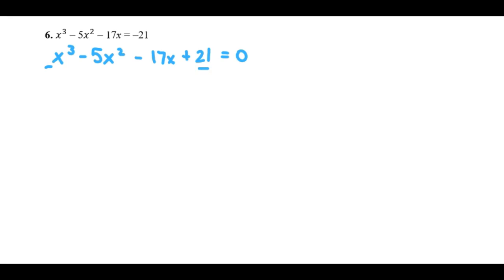So in this case, we have 21 and 1. So my possible zeros are plus or minus 21, plus or minus 7, plus or minus 3, and plus or minus 1. So let's test a few of those out.